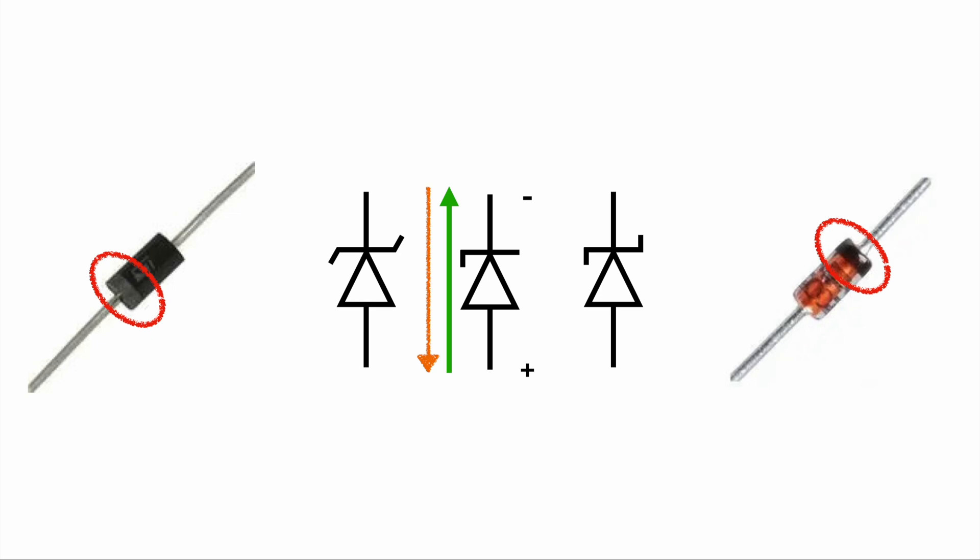But let's dive right into the behavior of this special type of diode. So first, a bit of theory. Let's take a look on the chart. On the Y axis we have the current through the diode, and on the X axis we have the voltage applied on the diode.